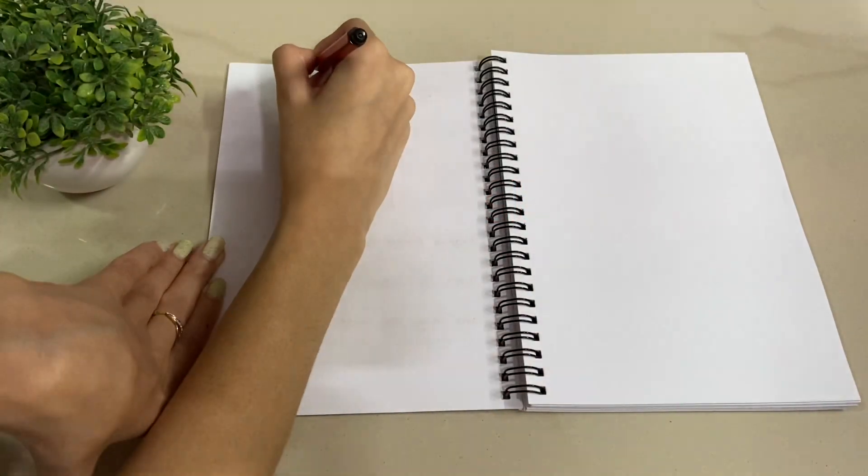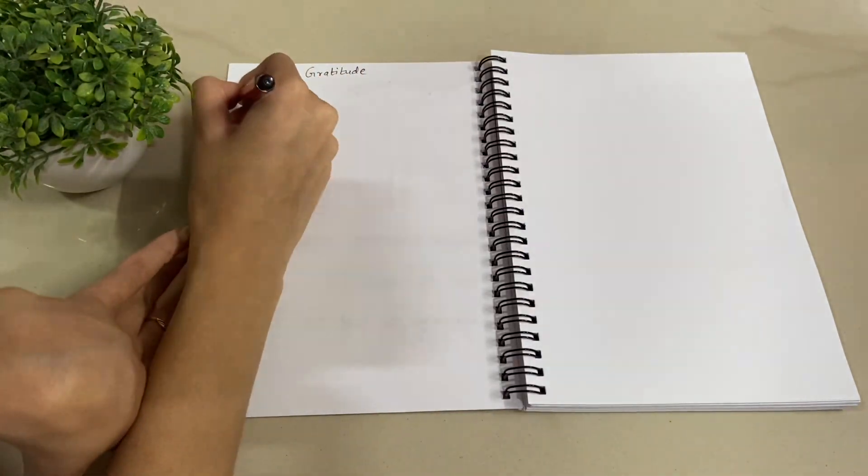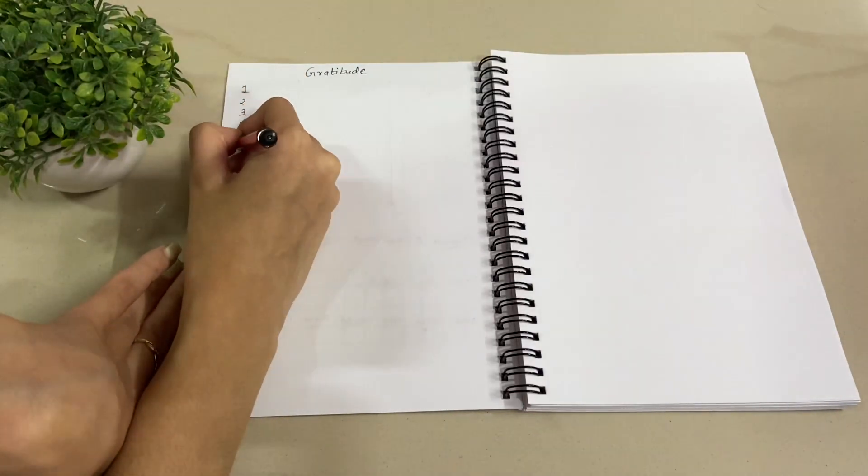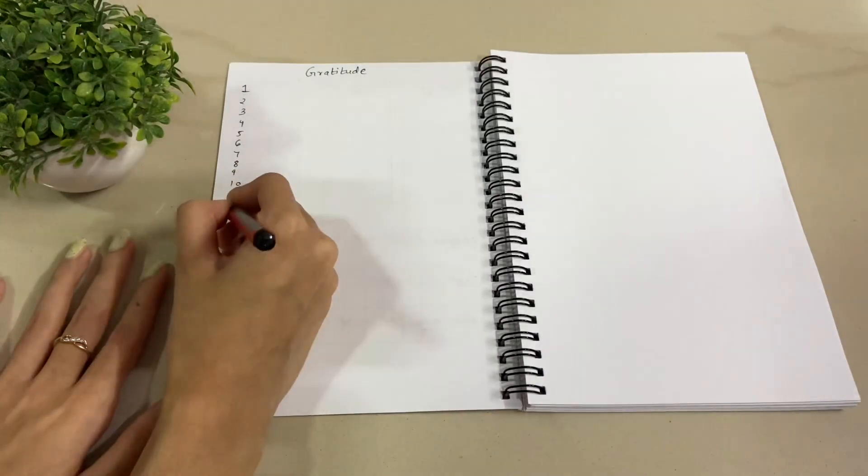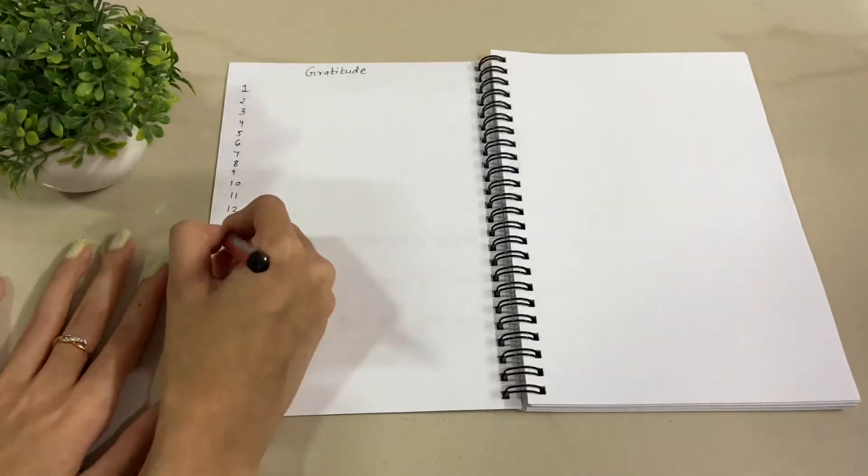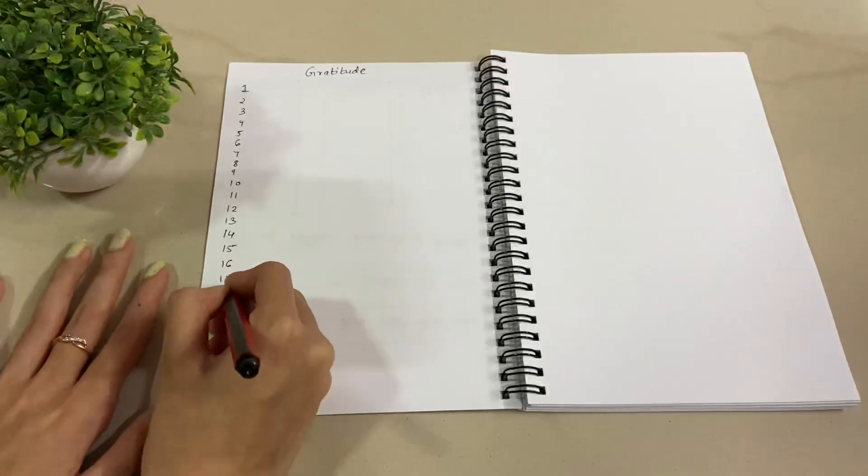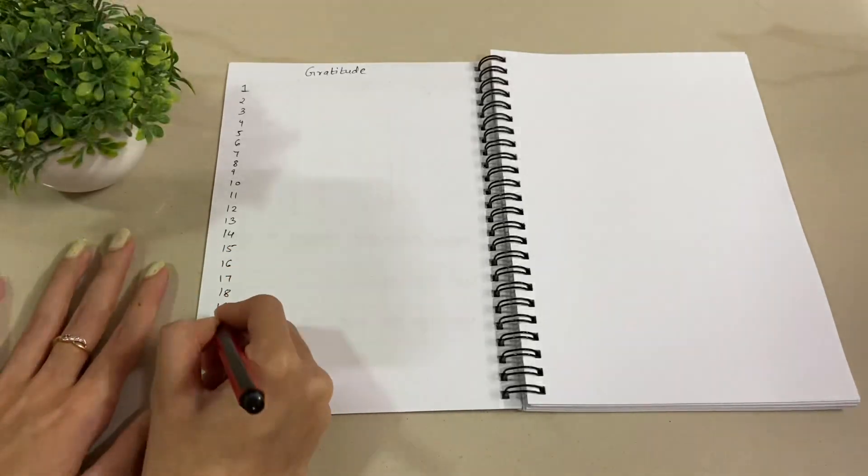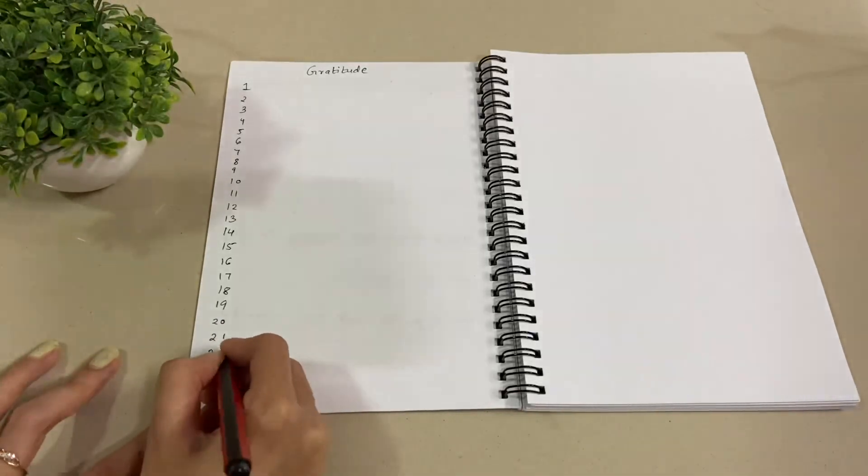Lastly, I will be making a gratitude sheet. For this I will simply write gratitude on top and then I will write the dates of the month like one, two, three till 31st. And then what I'm going to do is simply every single day I will write whatever I'm grateful for. So this is a really nice practice and you should also inculcate it in your daily routine. Be grateful for things and it will attract even better things in your life.